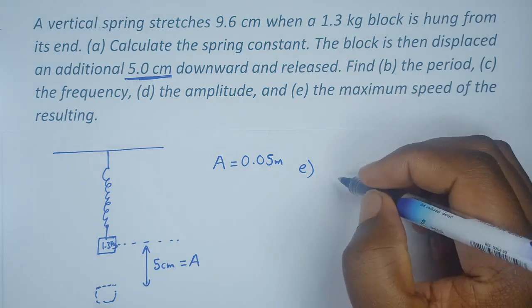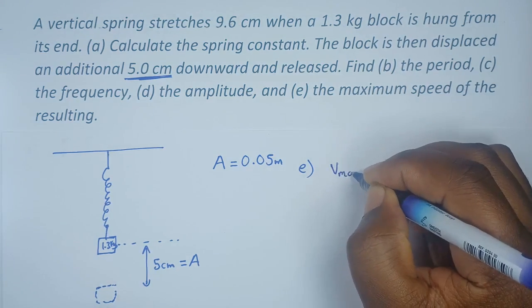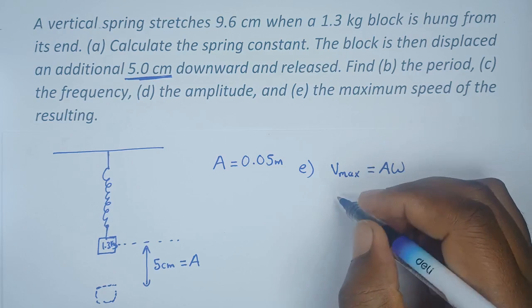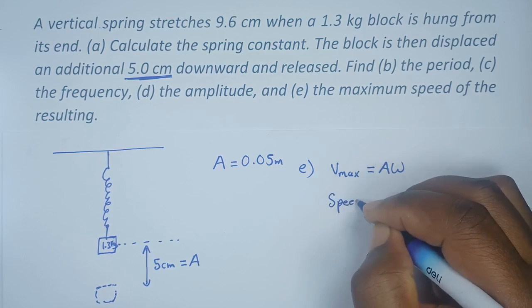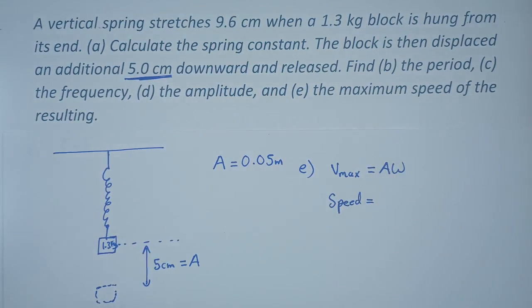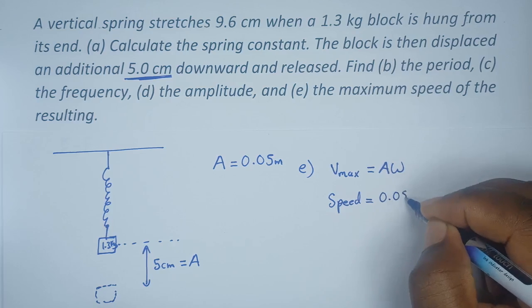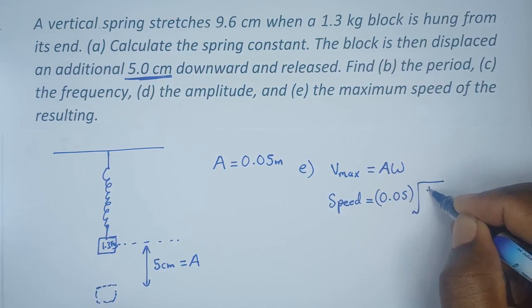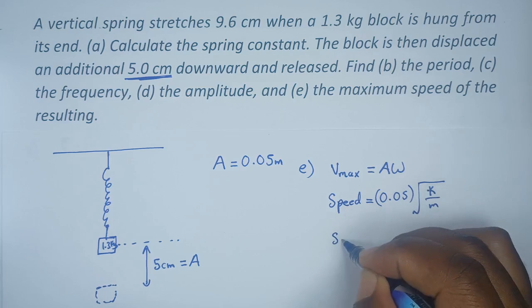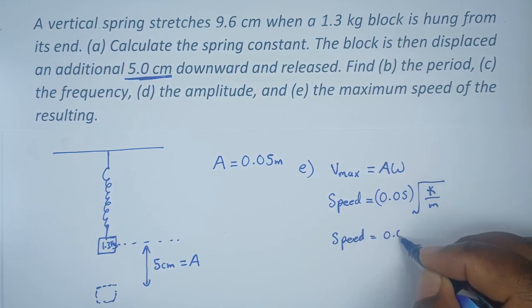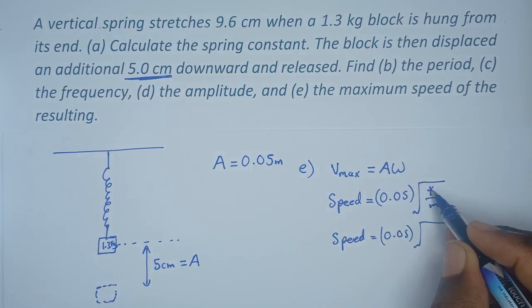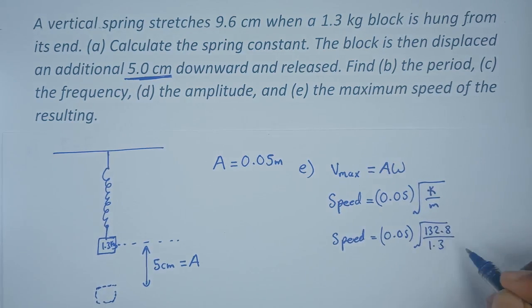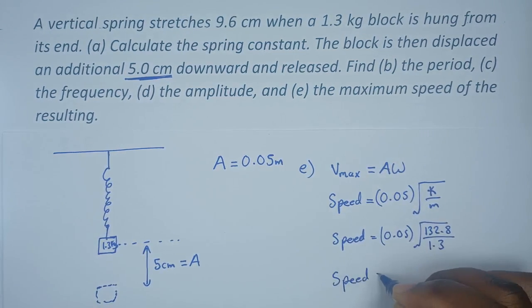Part e requires us to find the maximum speed. Maximum speed, or velocity maximum, is given by amplitude times ω. Our amplitude is 0.05, and ω is the square root of k over m, so speed equals 0.05 times the square root of 132.8 over 1.3. This gives us a speed of 0.51 meters per second.